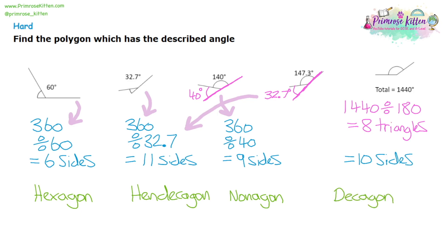A 10-sided shape is a decagon. All these methods are interchangeable — you could work out the exterior angle and take it away from 180, or rather than dividing 360 by the number of sides to find the exterior angle, you could find the interior angle from the triangles and take it away from 180. Whatever method you remember is the method you are going to be using.